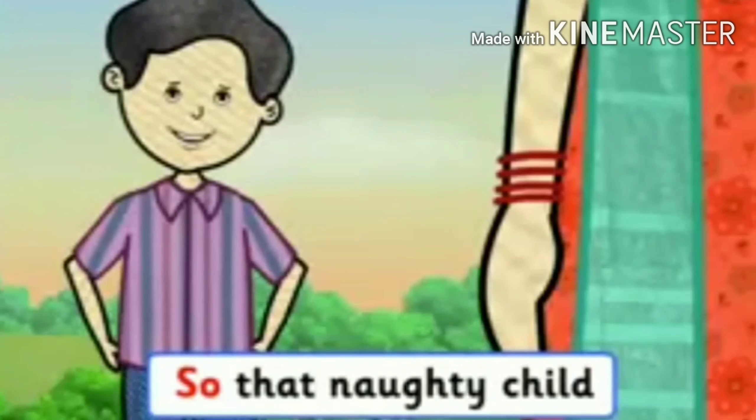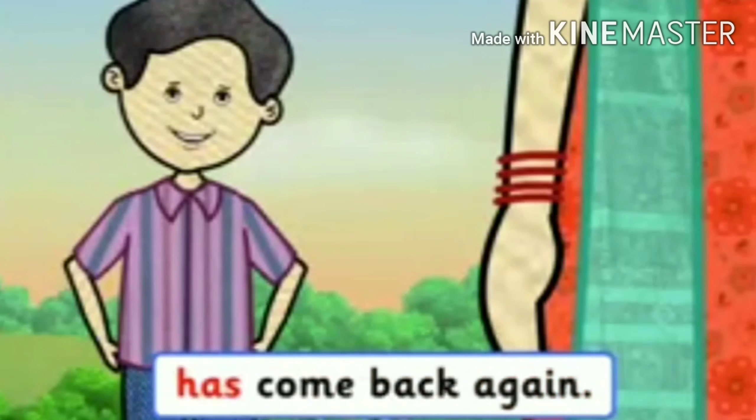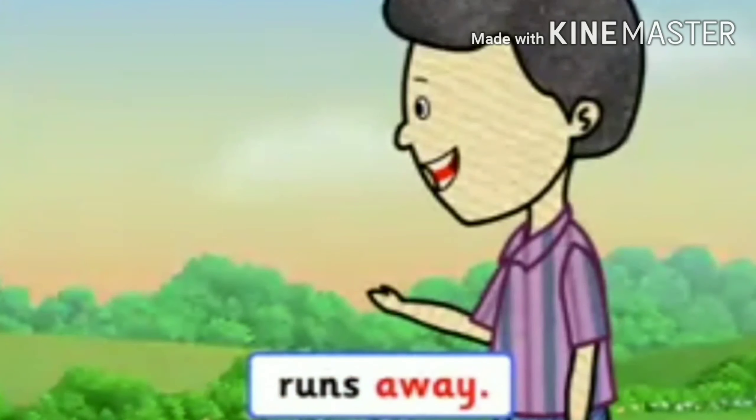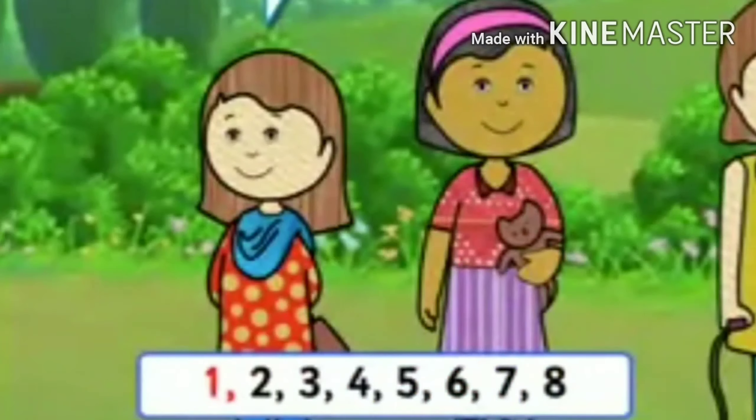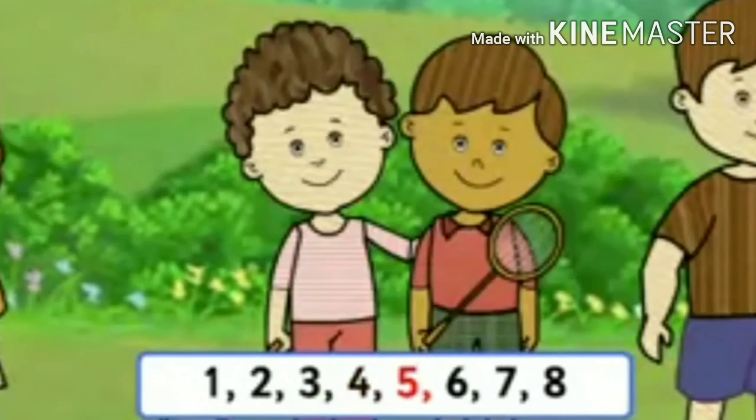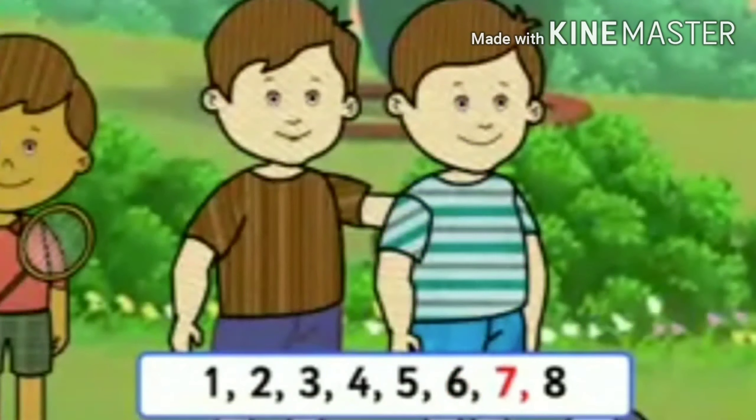So, that naughty child has come back again. When I count, this naughty child runs away. 1, 2, 3, 4, 5, 6, 7, 8. See?